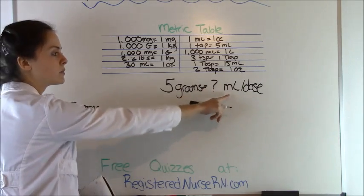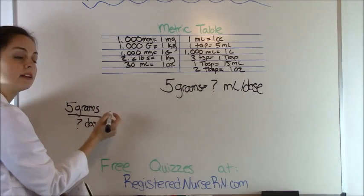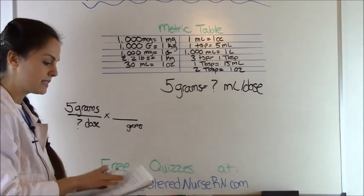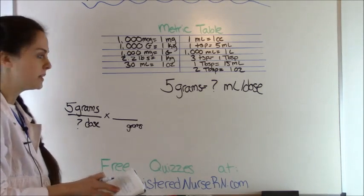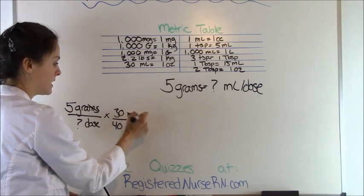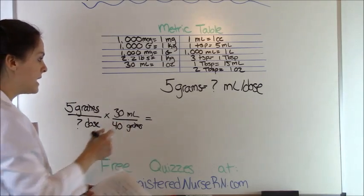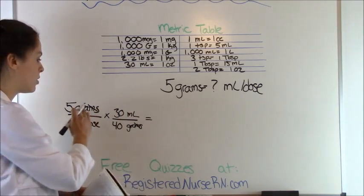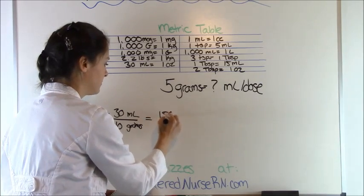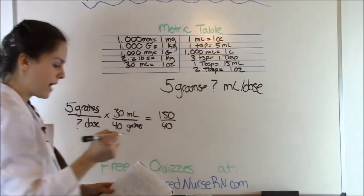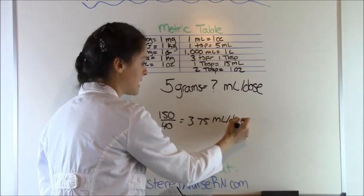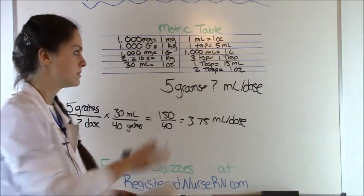We want to know how many milliliters per dose — we're trying to get to milliliters. In dimensional analysis, you work diagonally, so we're going to move grams to the bottom. What we're dispensed with is 40 grams equals 30 milliliters, so 40 grams goes on the bottom and 30 milliliters on top. Grams cancels out. Now multiply everything on top — 30 times 5 is 150 — and everything on the bottom is 40. Then divide: 150 divided by 40 equals 3.75 milliliters.